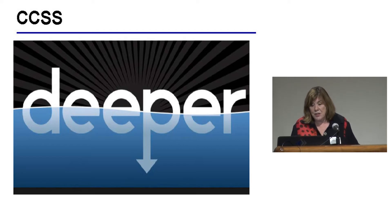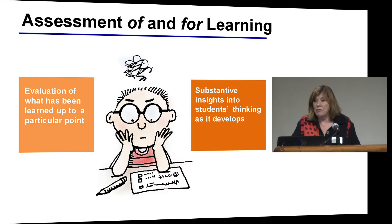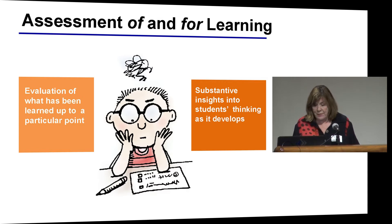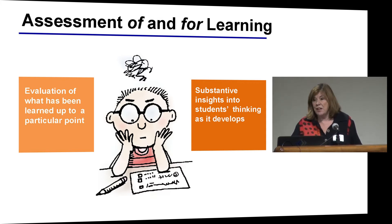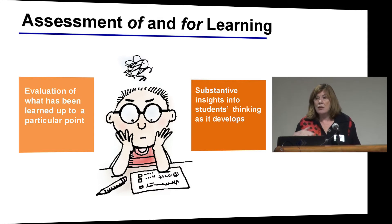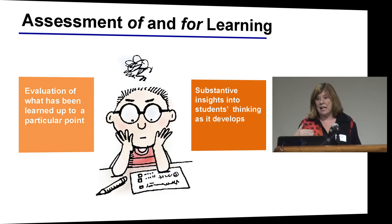Linda Darling-Hammond already introduced the notions of assessment of learning and assessment for learning. I want to elaborate on them here, because assessment can offer two views of a learner. The first is a retrospective view — where students have been and what they've achieved at a particular point. This is the summative function of assessment, summing up what students have learned up to a particular point. Those assessments serve a number of decision-making functions within the education system, but they're not particularly useful for providing insights into how deeper learning is developing during the course of its development.